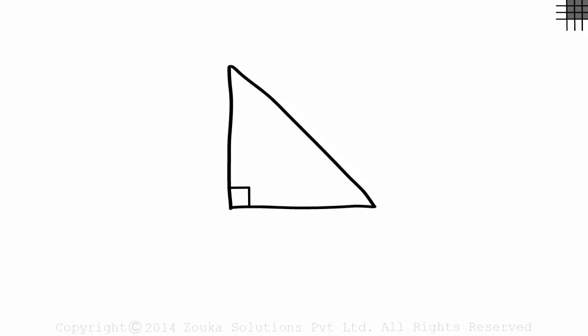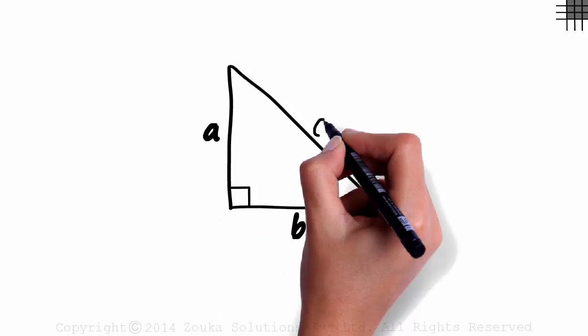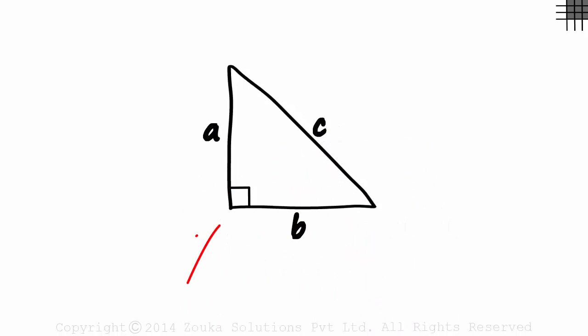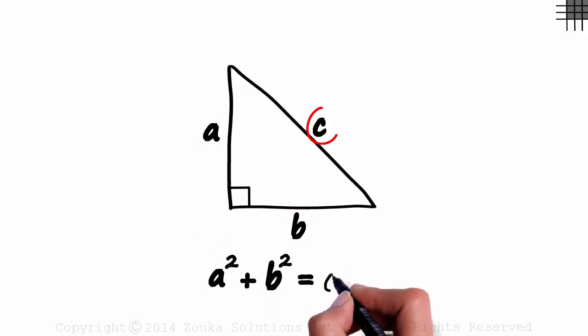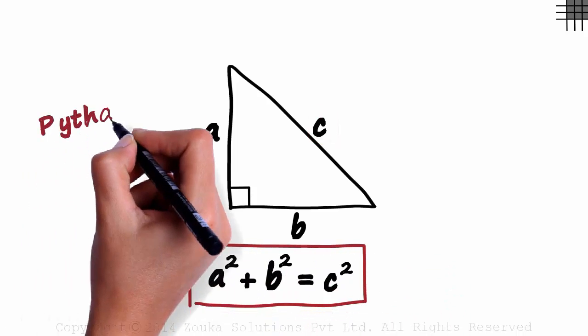Let the lengths of its sides be A, B and C. In this triangle, A squared plus B squared will equal C squared. This right here is called the Pythagoras theorem.